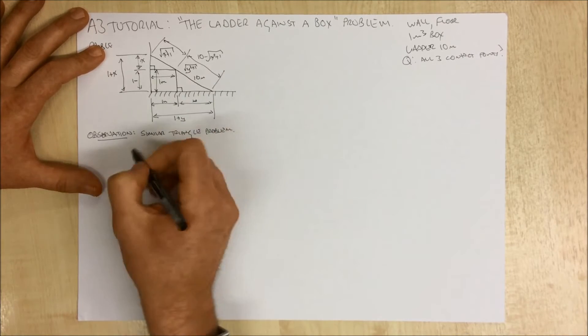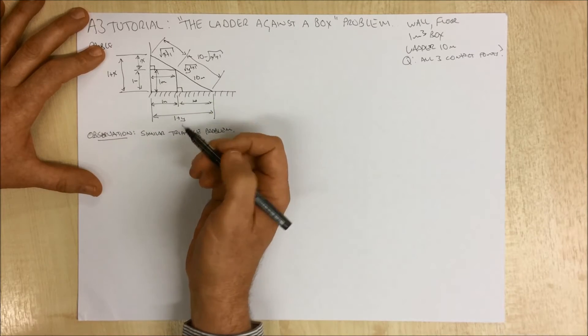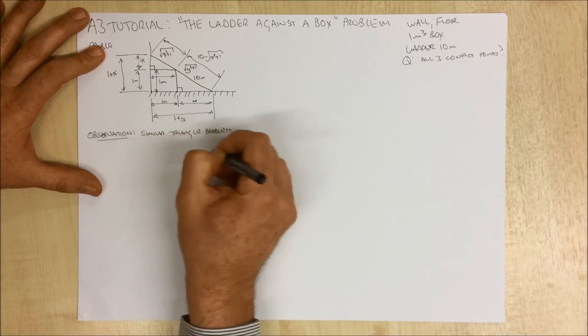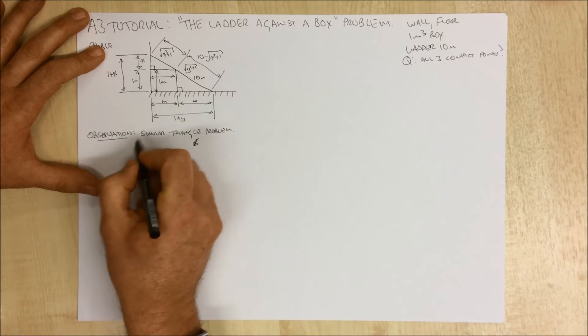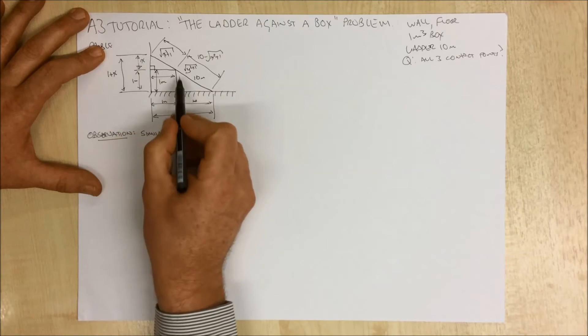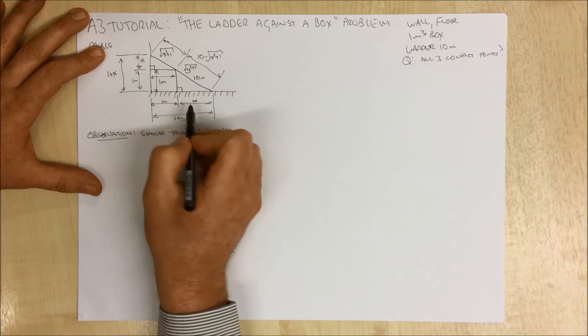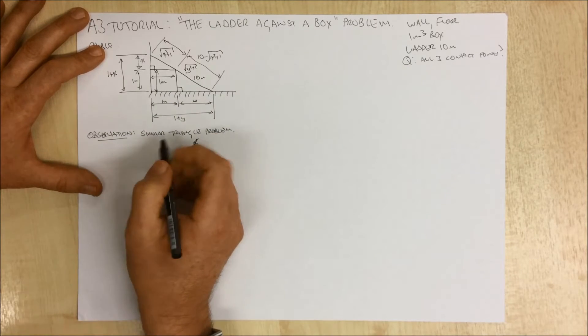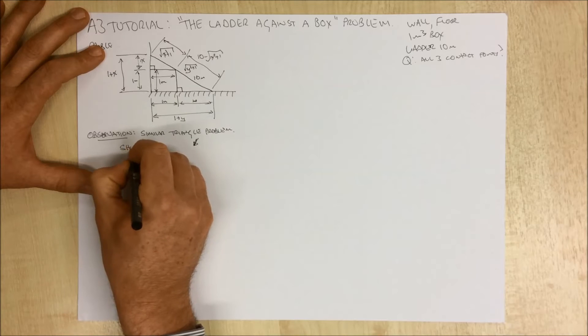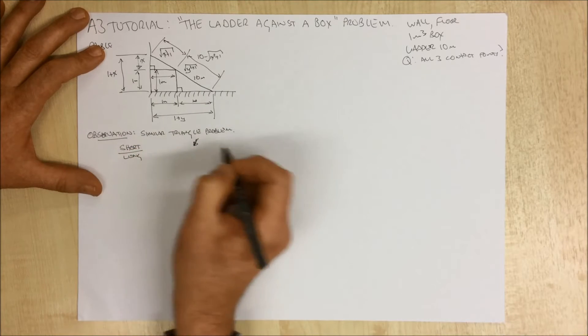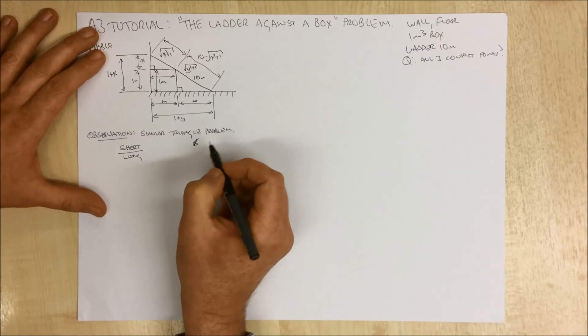And the theory of similar triangles says that if we've got two similar triangles, like these ones are, this triangle here is similar to this triangle, it says that the relationship between the short leg over the long leg for each triangle is the same ratio.